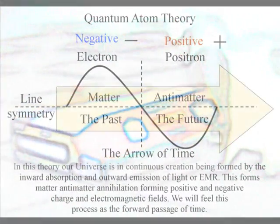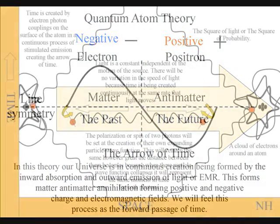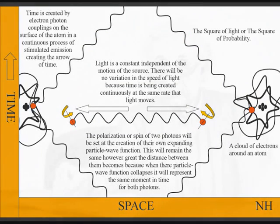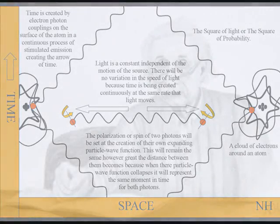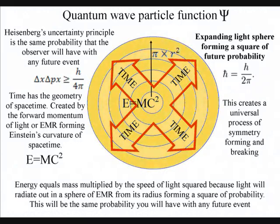The deep fundamental difference between quantum and classical mechanics is that quantum mechanics represents the forward passage of time itself. Objects form their own space-time geometry, forming a square of probability. Therefore we have Einstein's famous equation: energy equals mass times the speed of light squared.